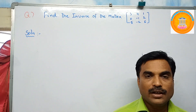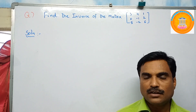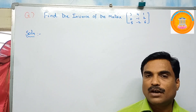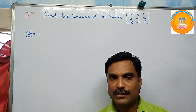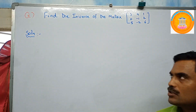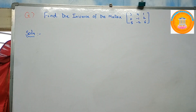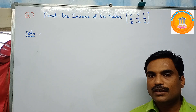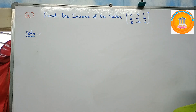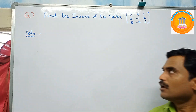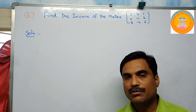Hi, welcome to my channel. In this new video I am going to solve a mathematical problem under the topic application of matrices and determinants. The problem is: find the inverse of the matrix with elements three, four, one in the first row, zero, minus one, two in the second row, and five, minus two, six in the third row. They have given a matrix and are asking us to find the inverse of this matrix.